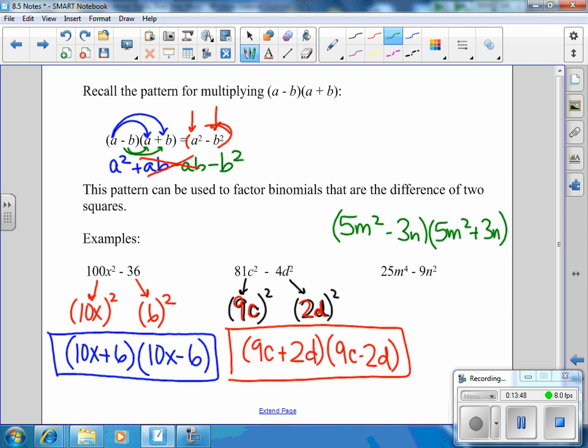So apparently, it kept rolling. There's the answer. 5m squared minus 3n times 5m squared plus 3n. So the whole m to the fourth right here is really m squared all squared. If you have any questions about this stuff, make sure you mark it down, and we will go over it tomorrow in class.